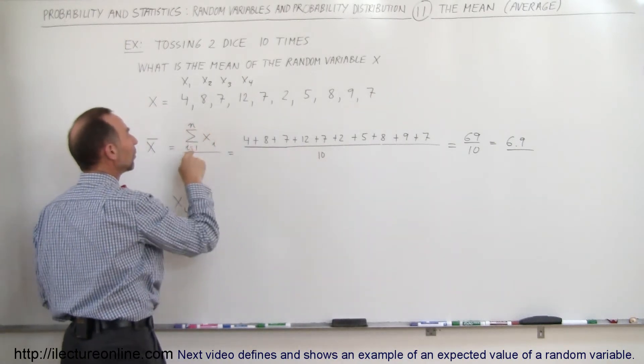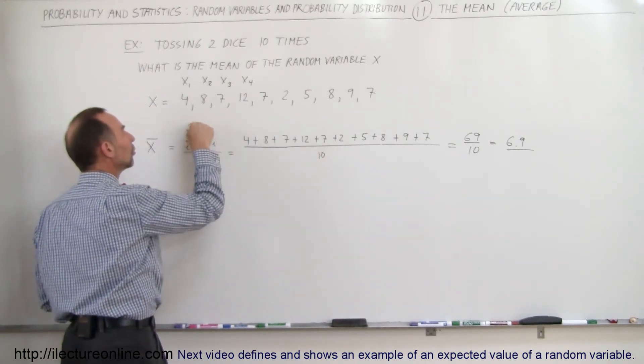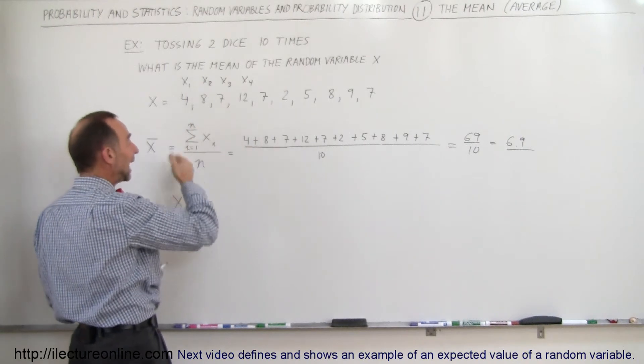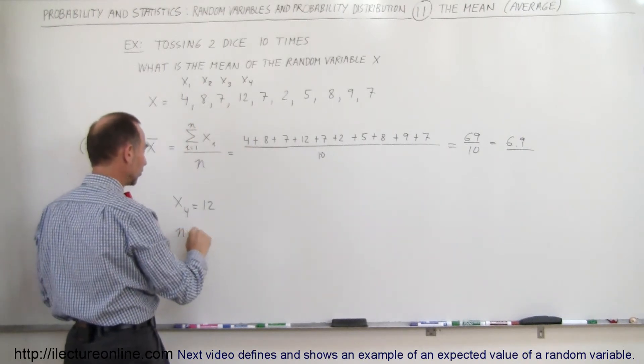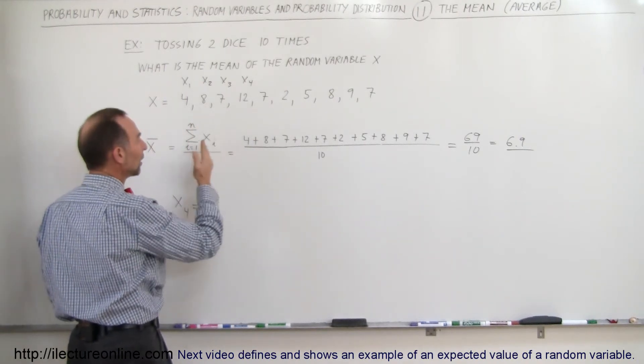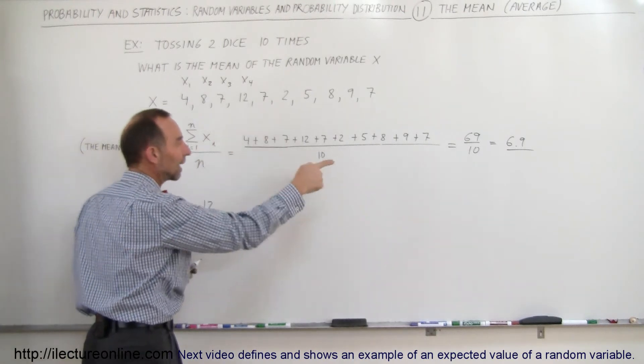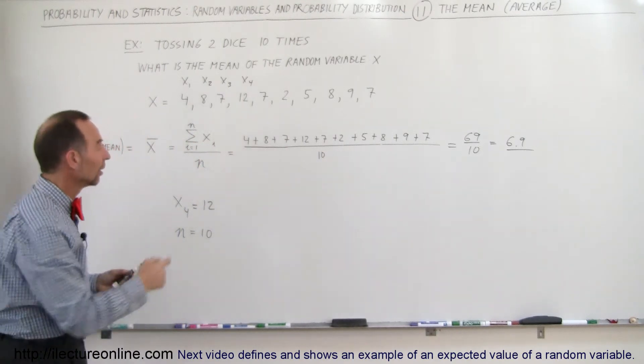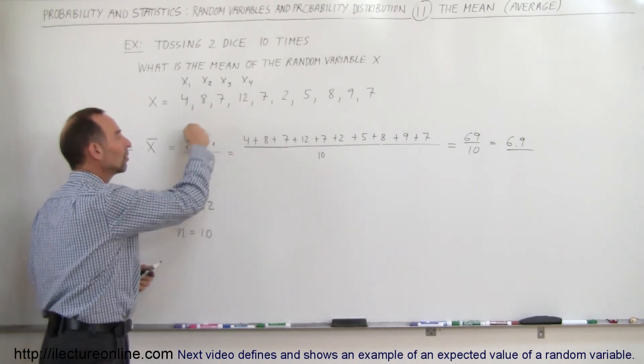And so when we sum them all up, we sum them from 1 to the total number that we have. In this case, N is going to be equal to 10 because there's 10 tosses. So that means we're going to add up 10 numbers, starting with the first one all the way to the last one, the last one being number 10. So this kind of helps you understand what this means.